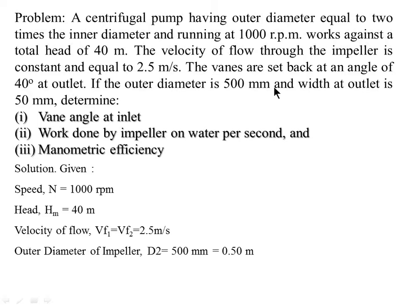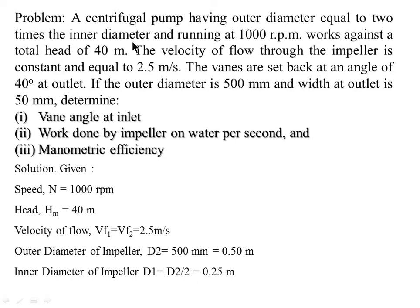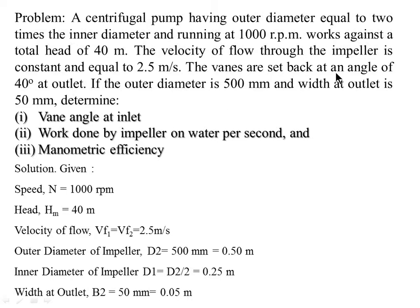The outer diameter D2 is given as 500 mm, which equals 0.50 meter. Since D2 equals 2 times D1, we get D1 equals D2 divided by 2, which equals 0.25 meter. Width at outlet B2 is given as 50 mm, equal to 0.05 meter. The vanes set back at 40 degree at outlet means angle phi equals 40 degree.